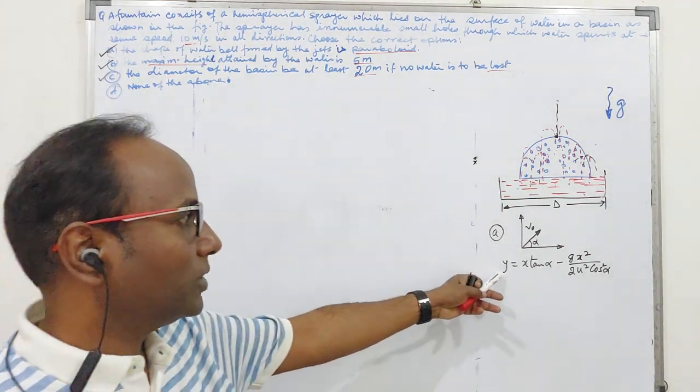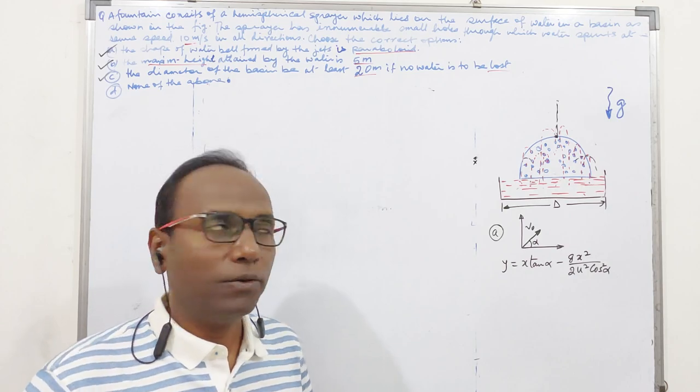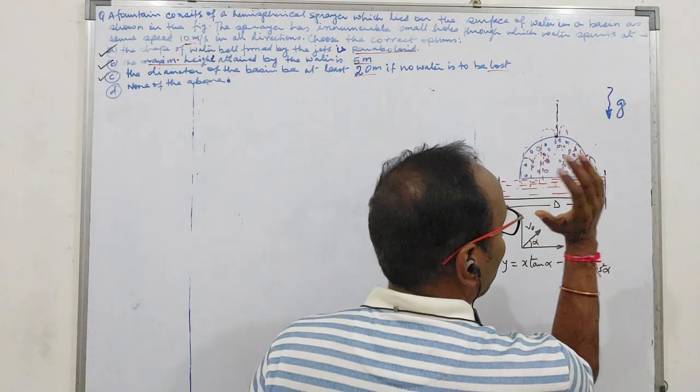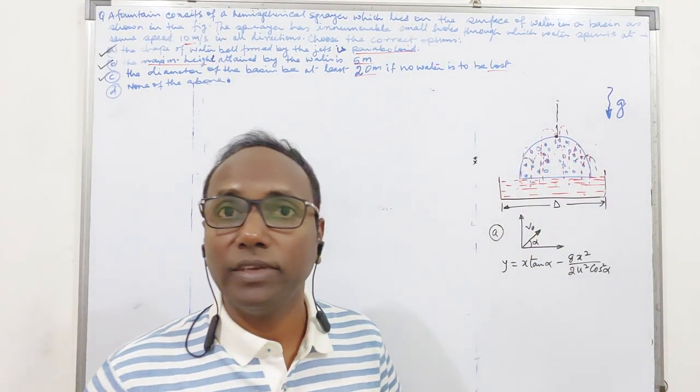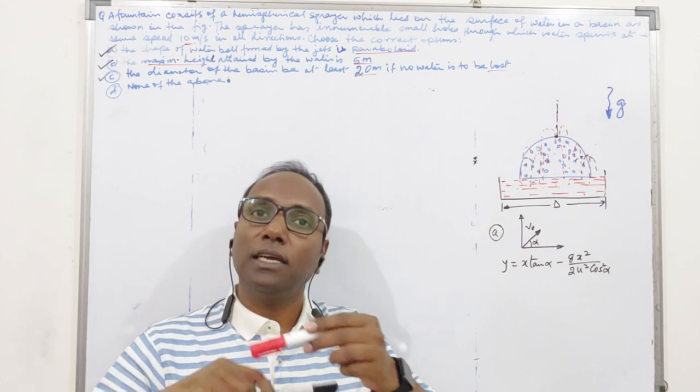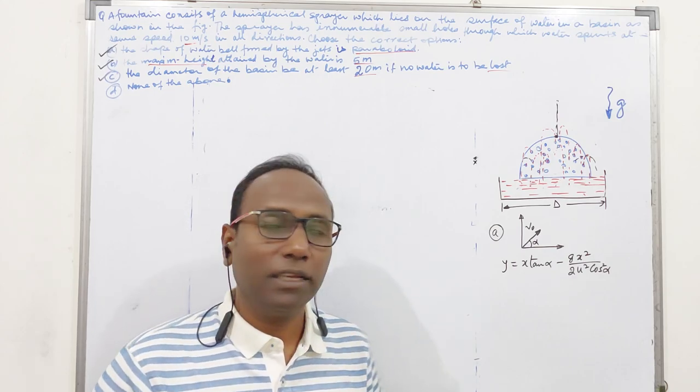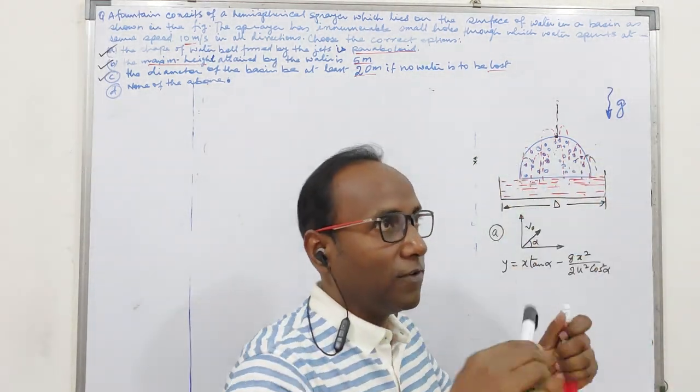So from this equation, we know that this is an equation of parabola, right? Holes are all around the hemisphere. And paraboloid is a surface which is formed when a parabola is rotated about its axis of symmetry. So all around the parabola is forming, the spray is forming.